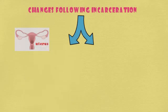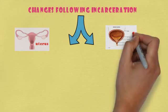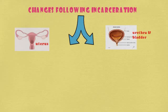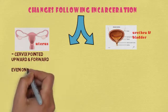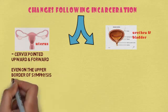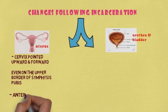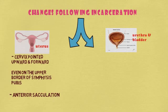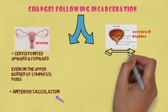Next are the changes following incarceration. The changes mainly occur in the uterus, bladder, and urethra — these three organs are affected due to retroverted gravid uterus incarceration. In the uterus, the cervix is pointed upwards and forwards and is placed above the upper border of the symphysis pubis. Rarely, the uterus continues to grow at the expense of the anterior wall, and this is called anterior sacculation.